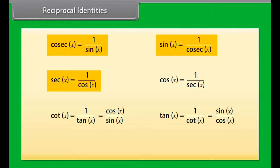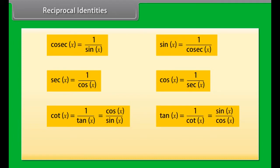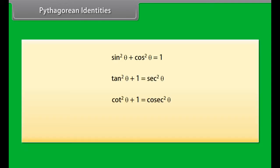Reciprocal identities: csc x is equal to 1 over sin x; sin x is equal to 1 over csc x; sec x is equal to 1 over cos x; cos x is equal to 1 over sec x; cot x is equal to 1 over tan x, which equals cos x over sin x; and tan x is equal to 1 over cot x, which equals sin x over cos x.